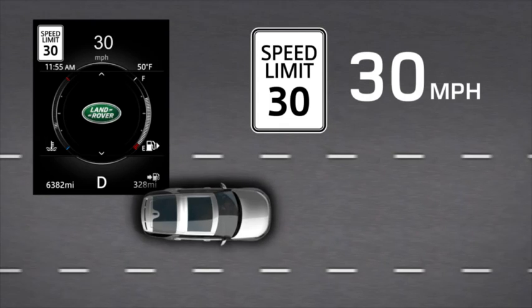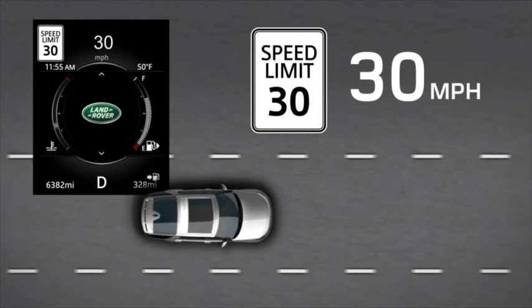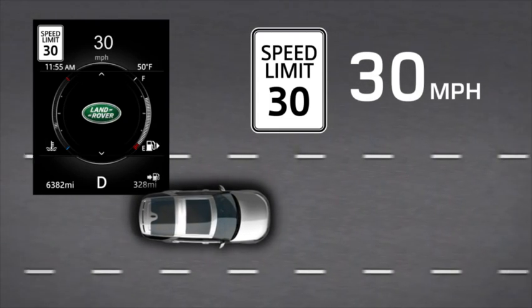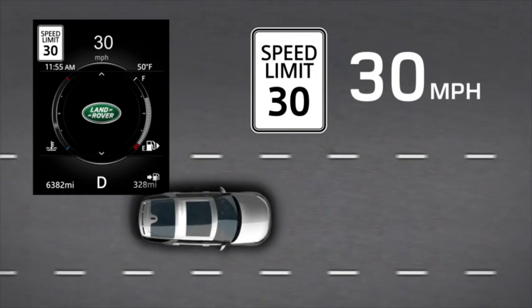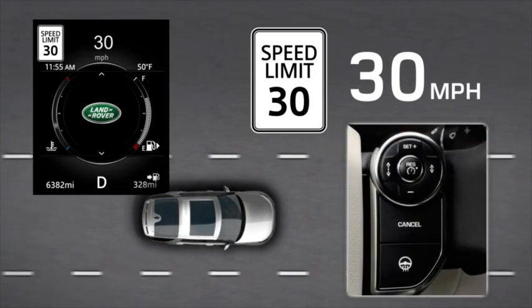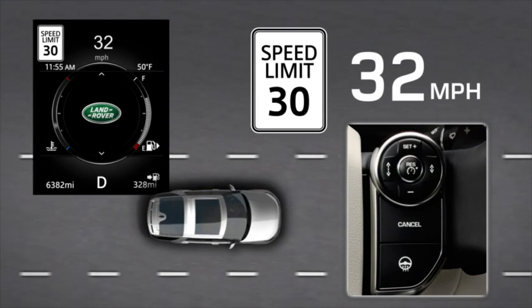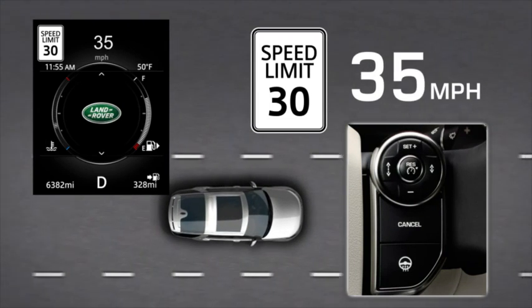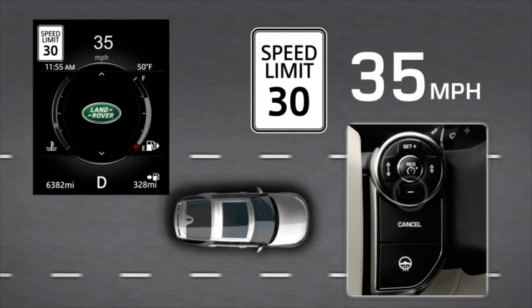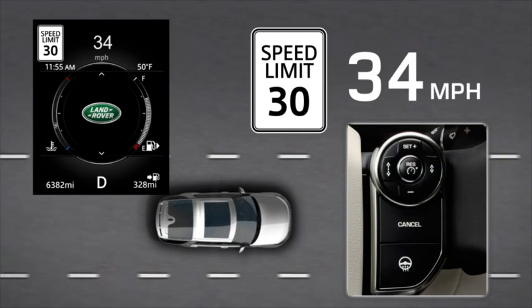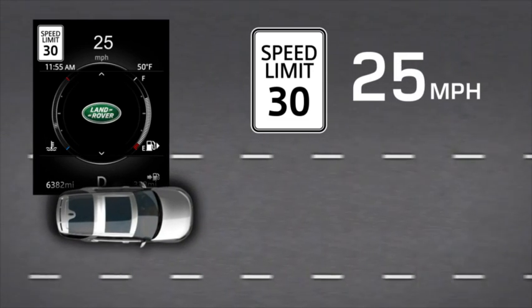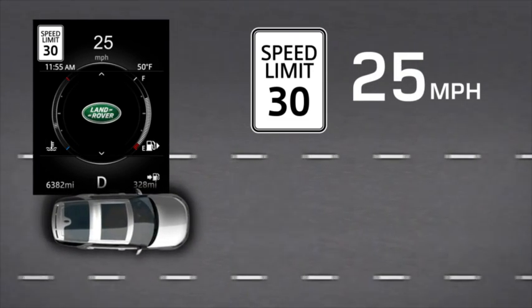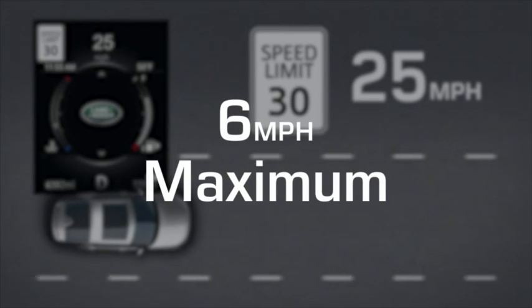The ASL detected speed limit can be adjusted, if required, to control the vehicle speed at just above or below the detected speed limit. Press the SET button to raise the maximum speed above the detected speed limit, or the MINUS button to lower it. The maximum increase or decrease available is 6 miles per hour above or below the detected speed limit.